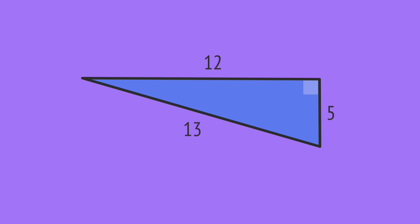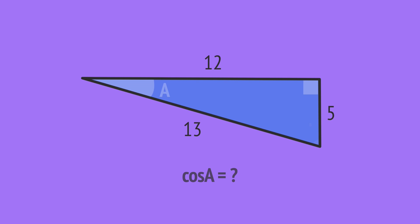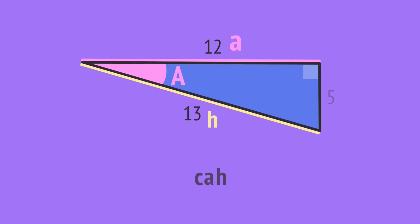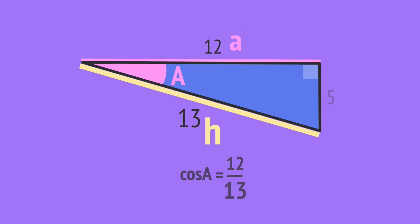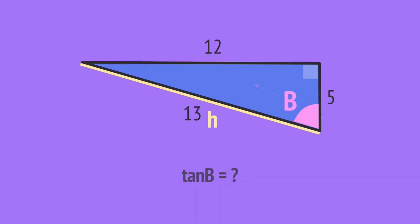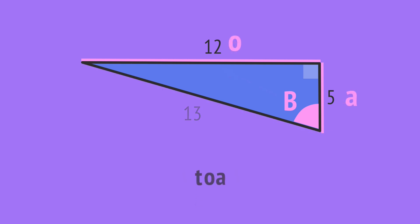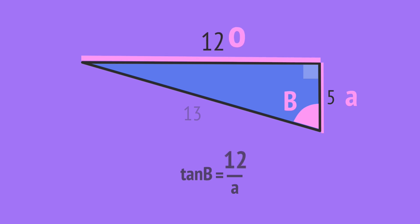Take a moment now to write trig ratios for this right-angled triangle. Pause this video and write ratios for the cosine of angle A and the tangent of angle B. Starting with angle A, label the hypotenuse, the opposite and the adjacent. The cosine is the adjacent over the hypotenuse, so we write cosine A equals 12 over 13. To work out the tangent of B, we need to relabel the opposite and the adjacent relative to angle B. The tangent is the opposite over the adjacent, so we write tangent B equals 12 over 5.